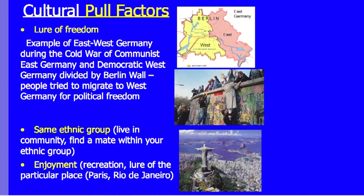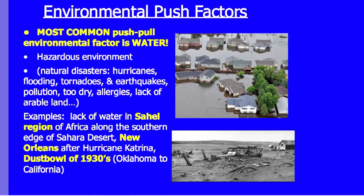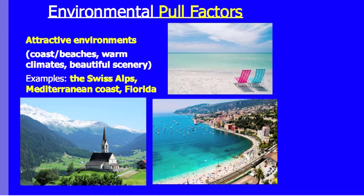Environmental push factors include too much water — floods or hurricanes — or lack of water, such as the Dust Bowl of the 1930s in Oklahoma. Other environmental push factors are tornadoes, extreme cold, extreme dryness, allergies, or lack of arable land. Environmental pull factors include lures of beautiful environments like the Swiss Alps, the Mediterranean coast, and the Florida coast, offering beautiful scenery and climate.